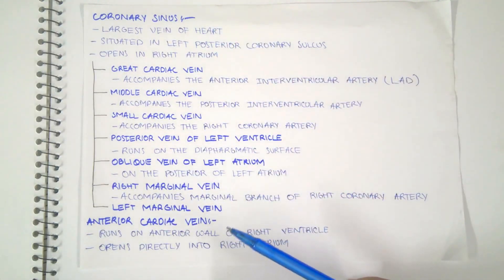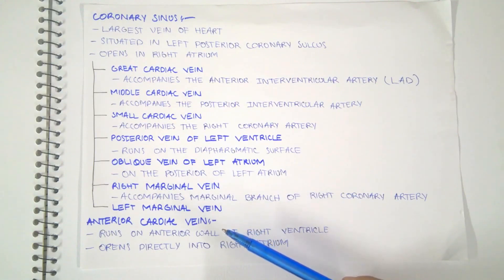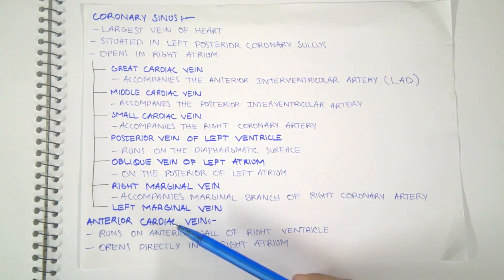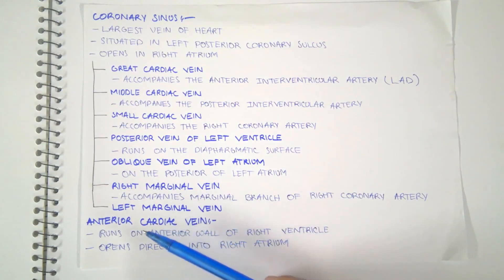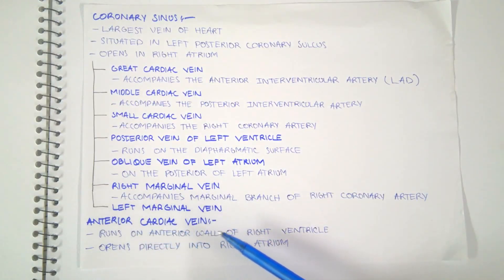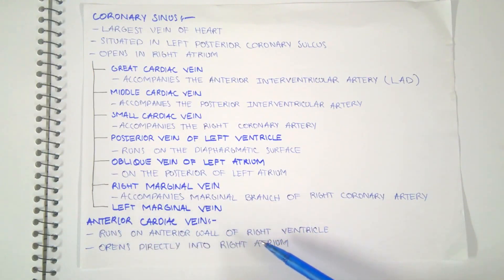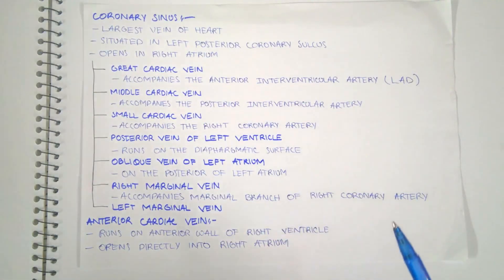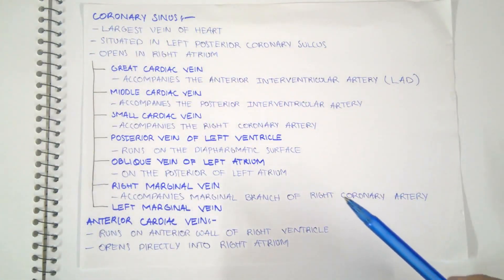The two veins which do not drain into the coronary sinus are: the anterior cardiac vein, which runs on the anterior wall of the right ventricle and opens directly into the right atrium; and the venae cordis minimae, which are the smallest veins and aren't really that important.